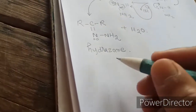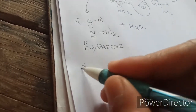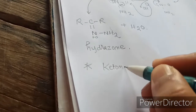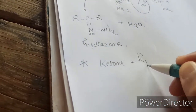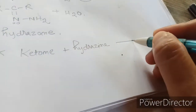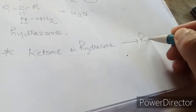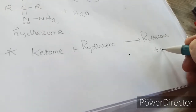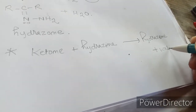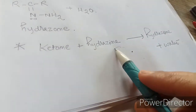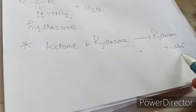So the first step of this reaction is the reaction of the ketone with hydrazine, which gives hydrazone plus water. The ketone reacts with hydrazine and gives hydrazone by removal of water. This is the first step.